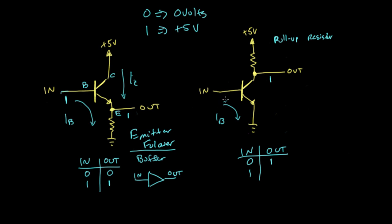When the input is 1, we have current flowing — 5 volts coming in — so current flows from base to emitter, creating a collector current. Our output is now effectively connected to ground, so we're going to have 0 coming out. So when input is 1, output is 0. The resistor is called a pull-up resistor because if the transistor is in saturation the output is connected to ground, but if the transistor turns off the resistor pulls it up to plus 5 volts. You might also see a pull-down resistor, which pulls the output down to ground when the transistor is off.